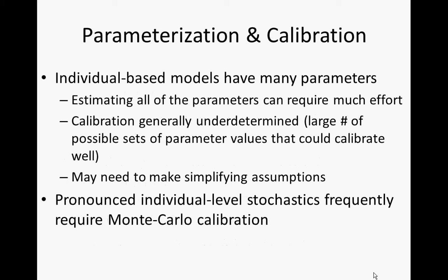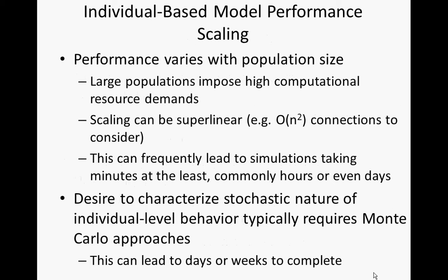Individual-based models have many parameters, and estimating all of them can require a lot of effort — we'll be talking about calibration in detail probably next week. For an individual-based model, performance varies with population size. Double the population and you at least double the running time of an individual-based model. Why might the running time go up more than double? Who can volunteer a reason why an agent-based model with population P might more than double in runtime if you go to population 2P?